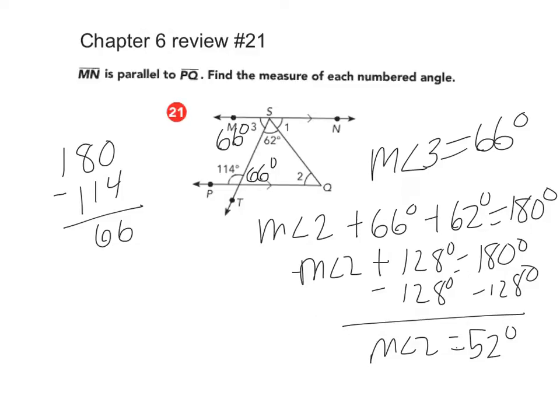So the measure of angle 2 is 52 degrees. Now, what's nice is in the beginning we talked about how SQ is a transversal. Angle 2, which is 52 degrees, is on the inside of the parallel lines on the alternate side of the transversal as angle 1.